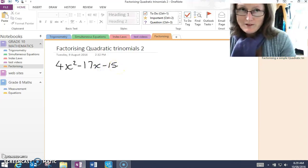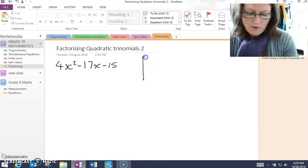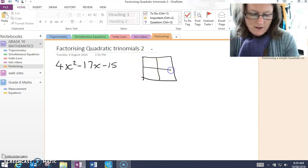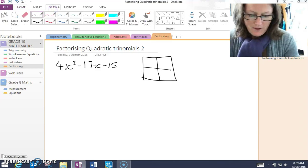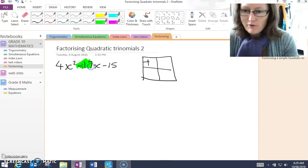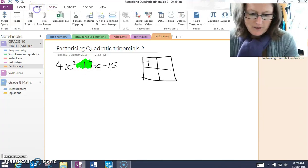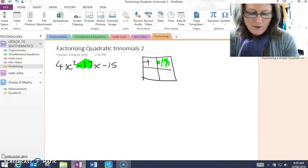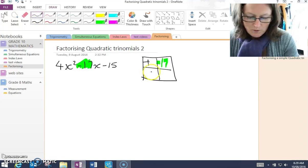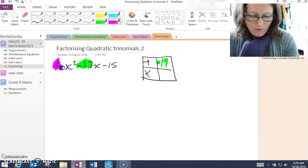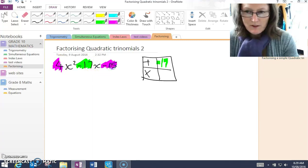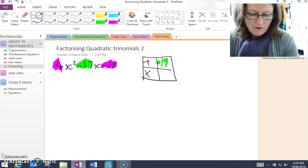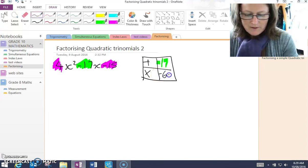Now again, factorising quadratic trinomials, we'll use the box method. So I draw my box, and in my box I need to choose two numbers that add to the thing in front of the x. So the thing in front of the x is minus 17. The two numbers that I choose need to multiply to 4 times minus 15. So the two numbers that I choose need to multiply to minus 60.